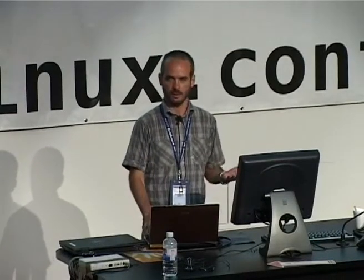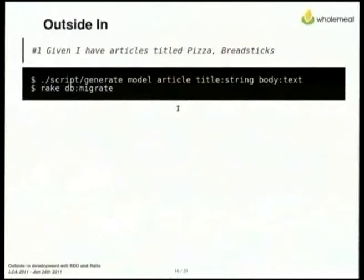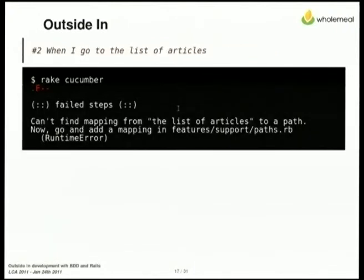So I need an Article model. Simply generate an article — it's got a title as a string and a body text — and I'll bring my database up so that it's got those database fields. We've got one green dot now. We've passed that first line and I'm on to the next one.